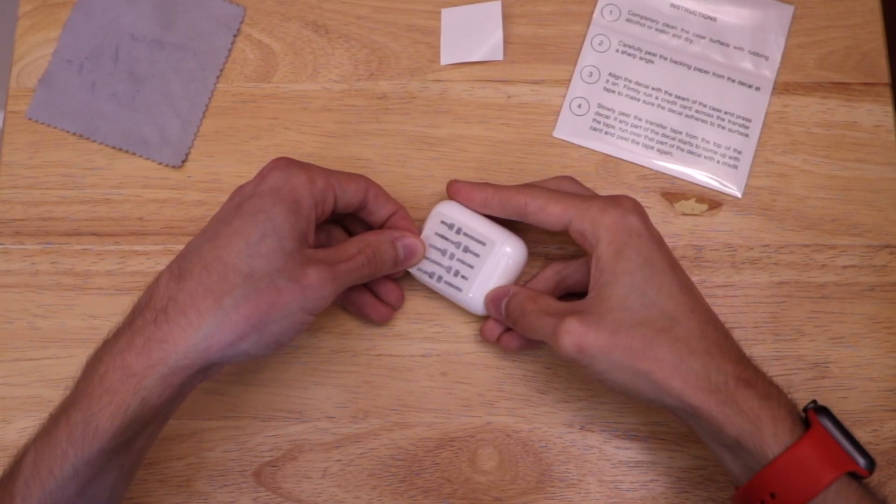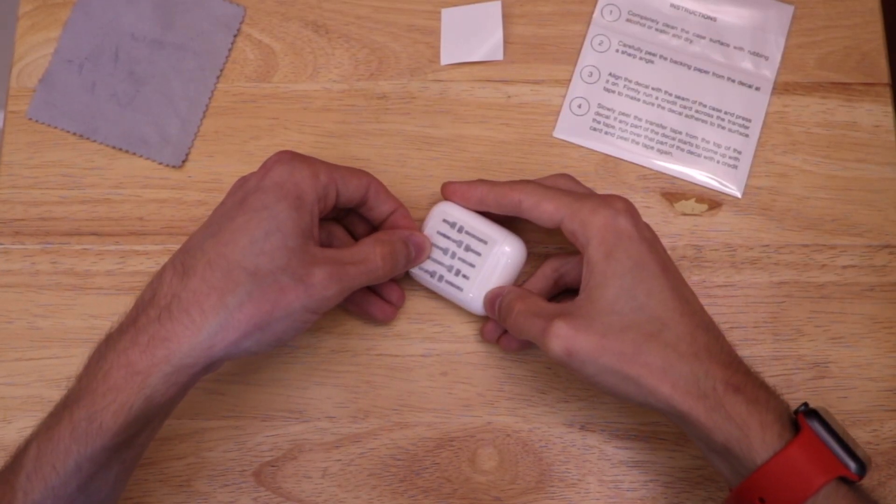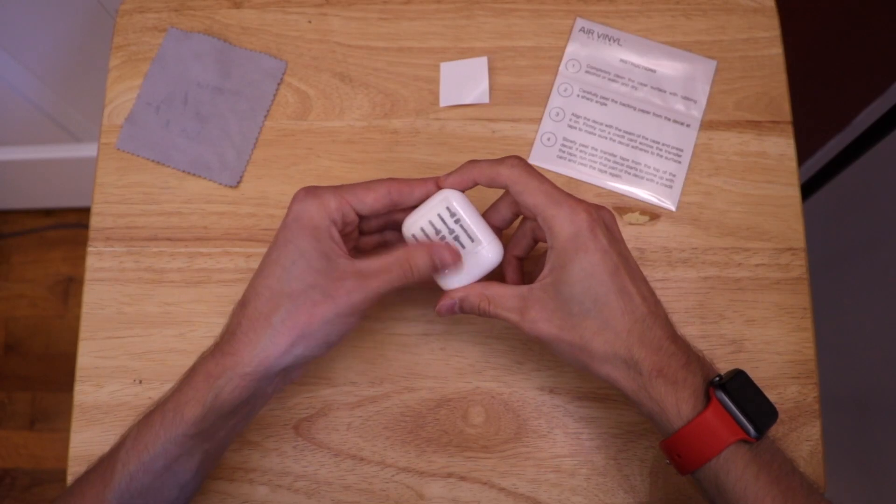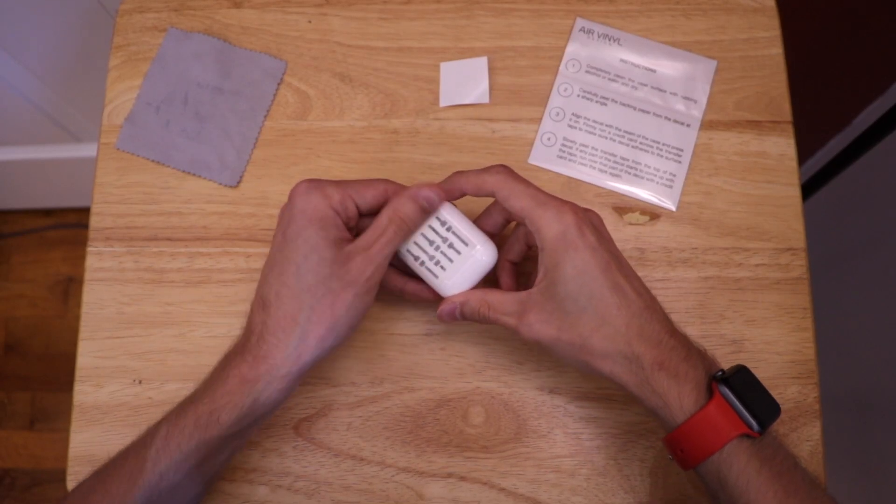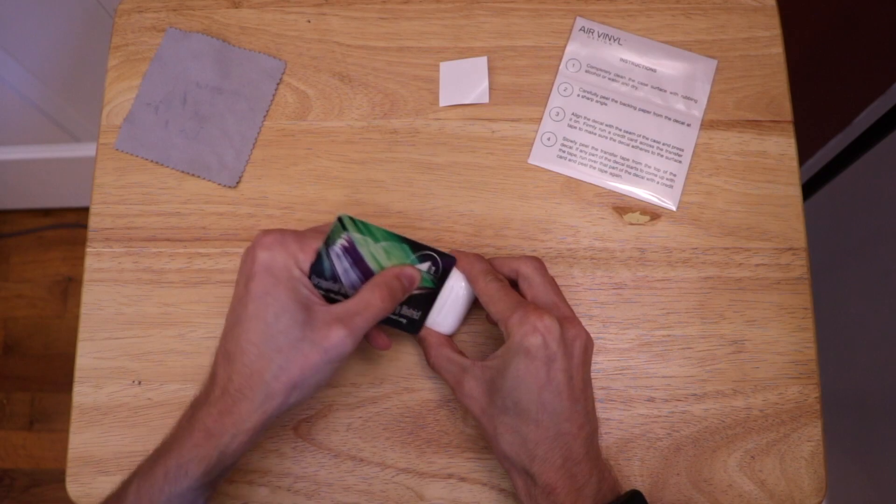Once you get through this you want to line up the sticker so that it's centered on whatever you're putting it on and then it looks good. I started by rubbing my fingers over it to get it to adhere but after that it's a good idea to grab a plastic card to fully adhere it.